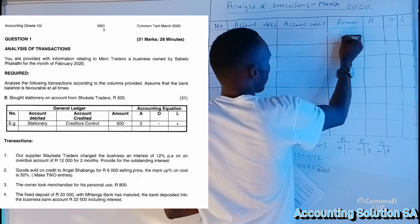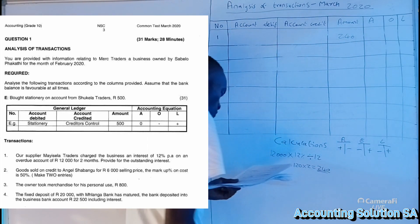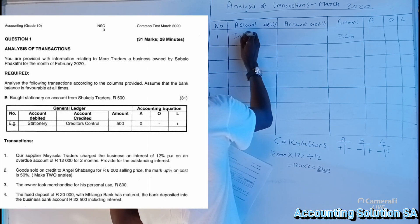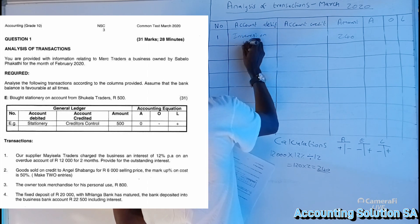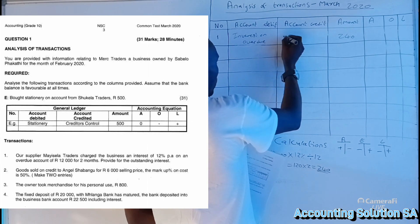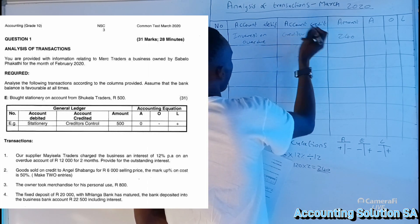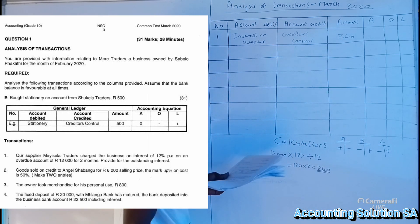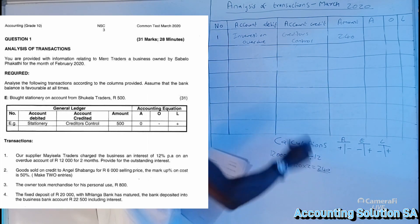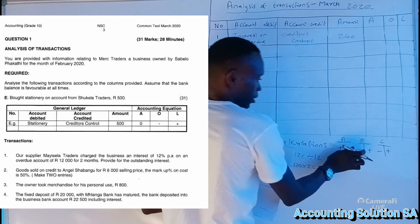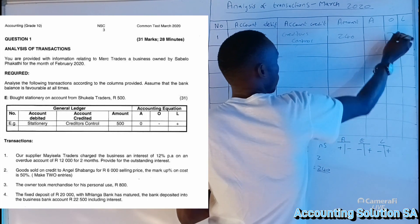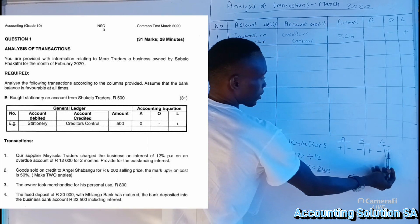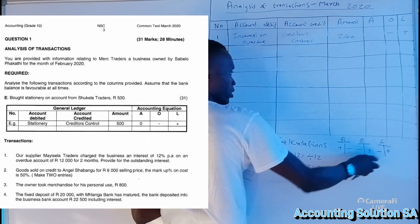Our amount is R240. The accounts we are going to record are Interest on Overdue Account (debited) and Creditors Control (credited), because our supplier will record this under Creditors Control. For the accounting equation: Interest on Overdue is an expense, which means Owner's Equity is minus, and Creditors Control is a liability which is plus, because liabilities increase on the credit side.